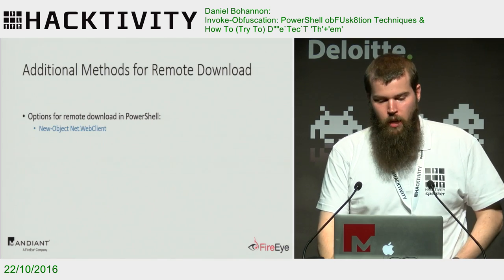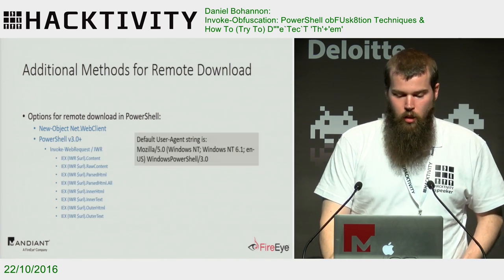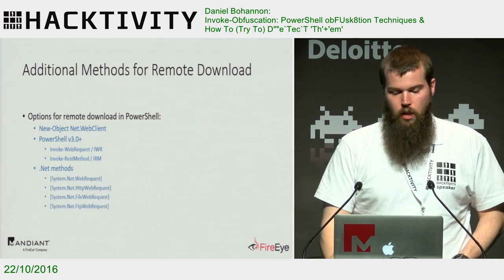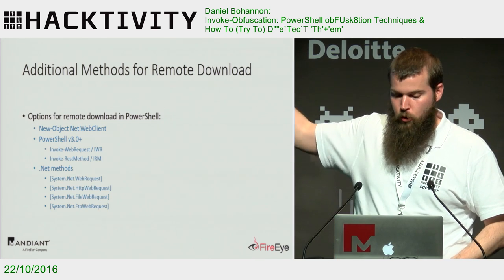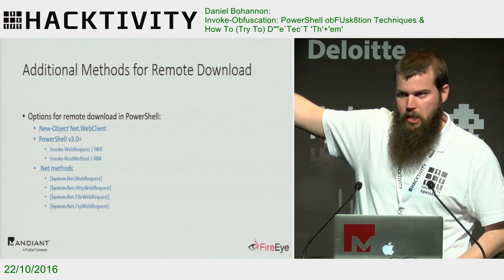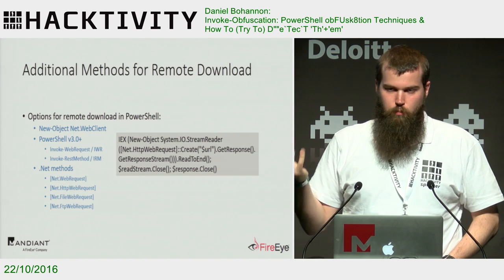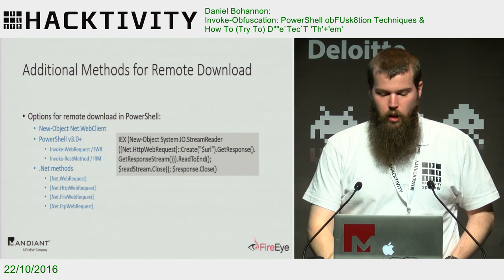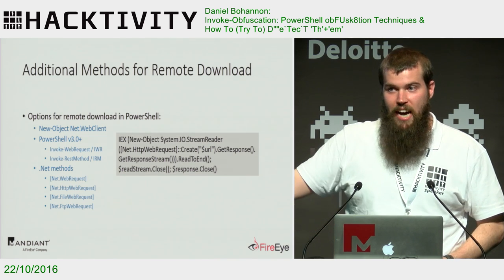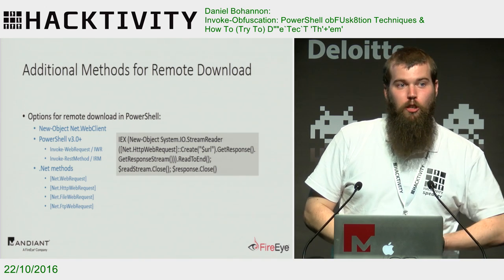Let's look at some additional methods. We looked at the basic one — mostly what we see attackers using. With PowerShell 3 and later, we have Invoke-WebRequest and Invoke-RestMethod. Going back to any version, we have these .NET methods — the 'System.' prefix isn't really necessary. We've seen some attackers use some of these where you have to treat the byte stream back into an expression before you invoke it. It's a lot quieter in the PowerShell logs — if you can do something in .NET directly, it may not show up in PowerShell logs at all.